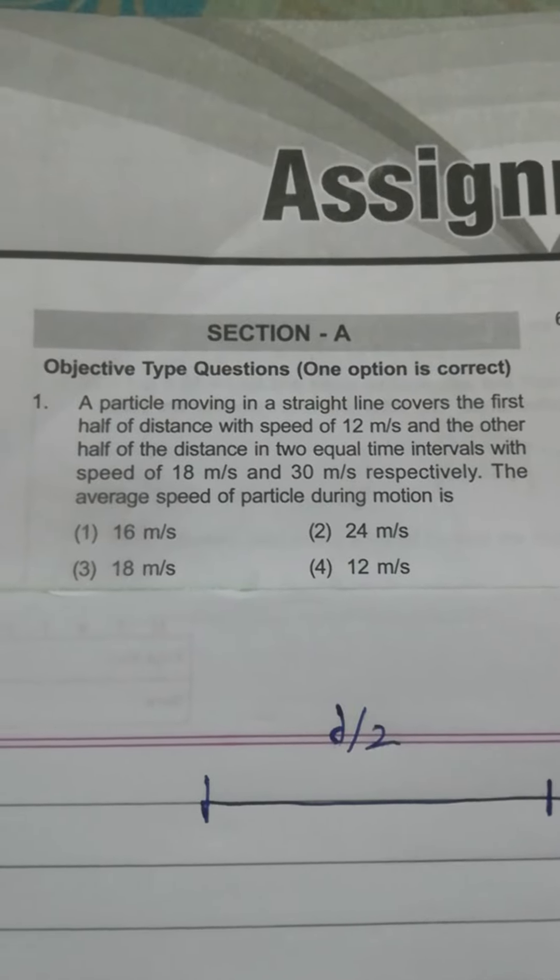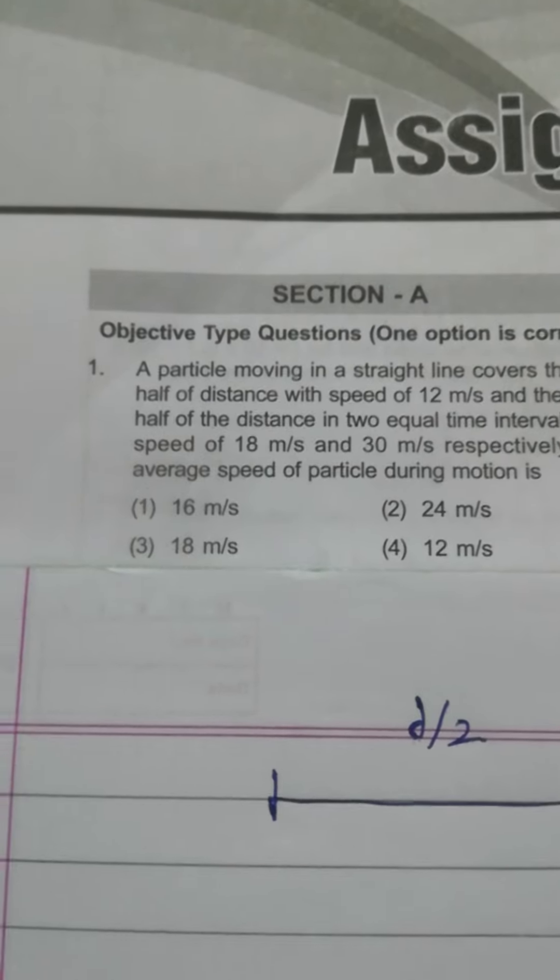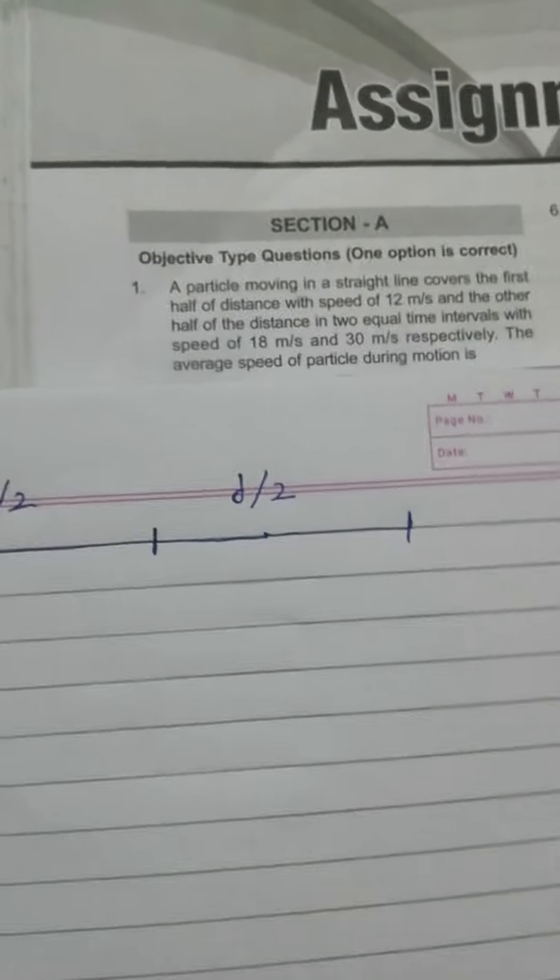And we are asked to find average speed of particle. So firstly we should draw the graph to avoid the confusion. The graph looks this way.